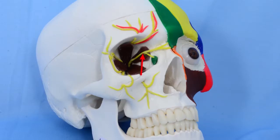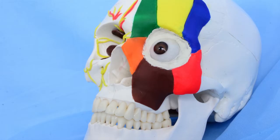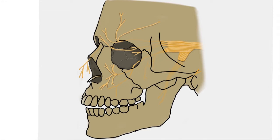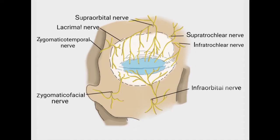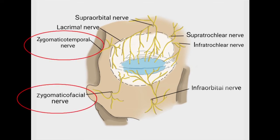The nasociliary nerve branches into the anterior and posterior ethmoidal nerves and the infratrochlear nerve. They innervate the lacrimal sac, inner canthus, and the lateral aspect of the nose. The maxillary nerve enters the orbit through the inferior orbital fissure and emerges as the infraorbital nerve from the infraorbital foramen. The zygomatic branch enters the orbit and divides to form the zygomatico-facial and zygomatico-temporal nerves.